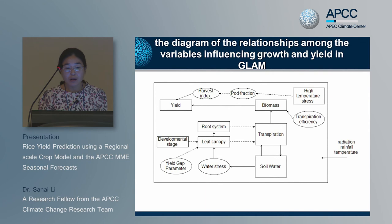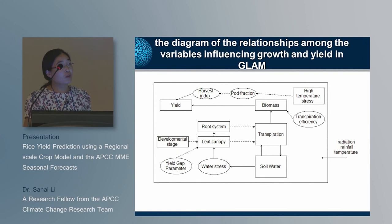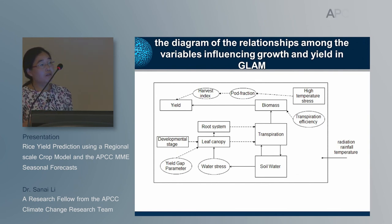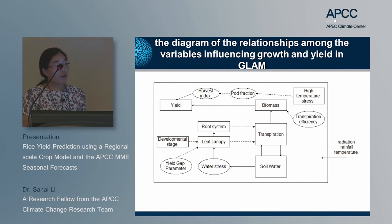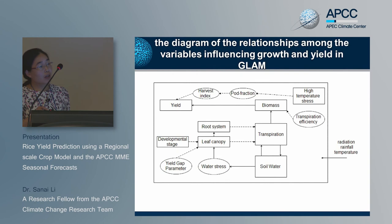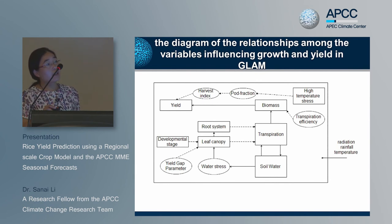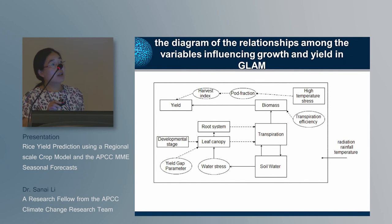In GLAM, biomass is accumulated through transpiration and transpiration efficiency. Transpiration is affected by solar radiation, soil water, leaf canopy, and the root system. Leaf canopy can be affected by water stress and the yield gap parameter. The yield is a product of harvest index and biomass, and the harvest index is affected by high-temperature stress.